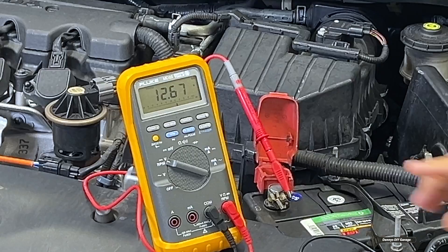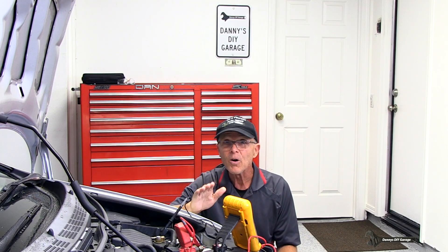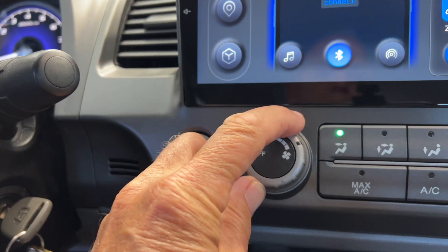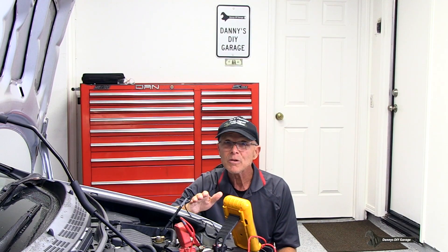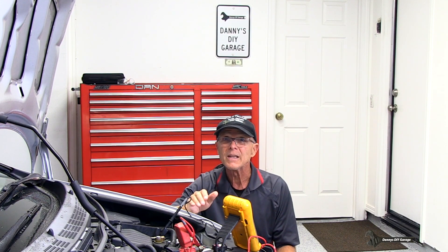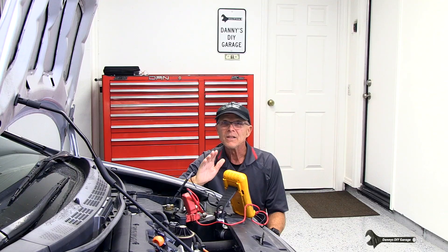Before I get started, let me explain what a parasitic draw is and how automobile electrical systems work. It all starts with the battery. When the battery is fully charged, it has about 12.6 volts. Your electrical components — headlights, blower fan, power windows, computers — they all depend on that battery to provide power. To keep up with the electrical demand, your vehicle needs a way to charge that battery, and that's the job of the alternator. This charges the battery whenever the engine is running.